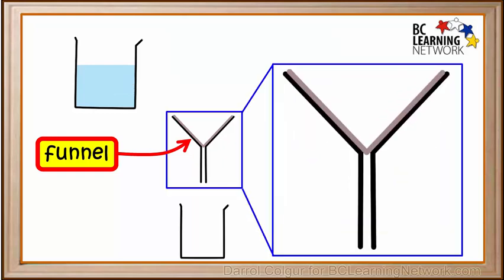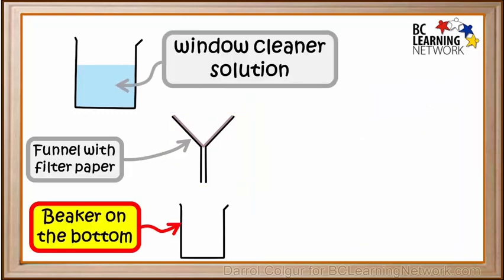Now we'll take a closer look at the funnel. Inside the funnel, we have some filter paper. Filter paper has tiny holes in it, which lets liquid solutions run through it, but traps larger particles. This is just like a coffee filter.